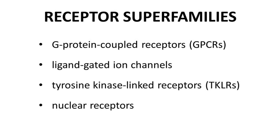Receptors are often subdivided into superfamilies based on similarities in structure and function. The first superfamily is the G-protein coupled receptor, or GPCR. GPCRs are membrane-bound receptors and are common targets for drugs that address metabolic disorders. The slow neurotransmitters like serotonin and dopamine also bind GPCRs. The next superfamily includes the ligand-gated ion channels, which are also membrane-bound. Ligands for ion channels include fast neurotransmitters like glutamate.